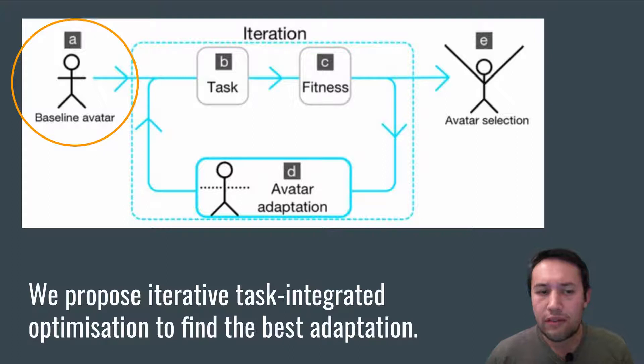We first start with a baseline avatar, and we let the user perform a task with the avatar. We then assess its fitness, which is a function that can be comprised of performance or other measures.